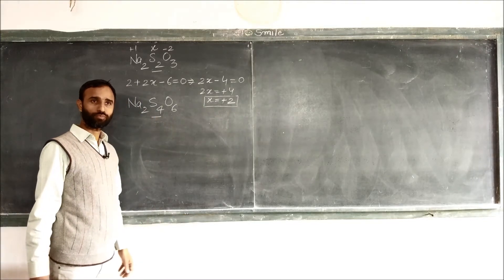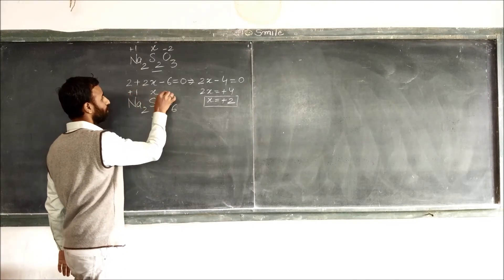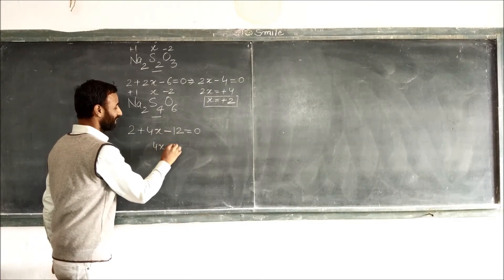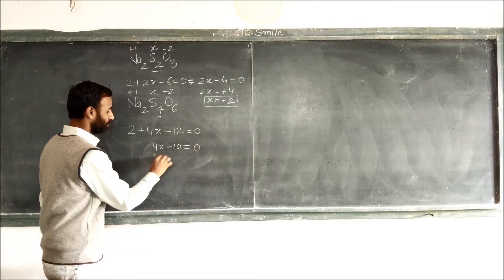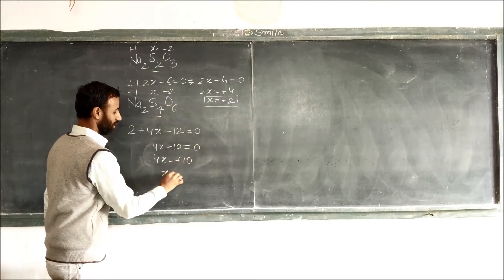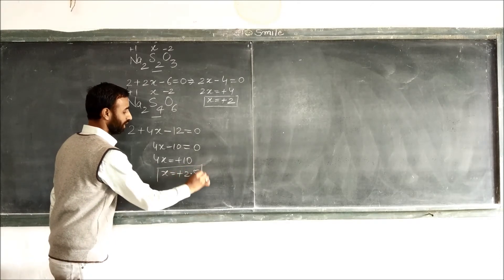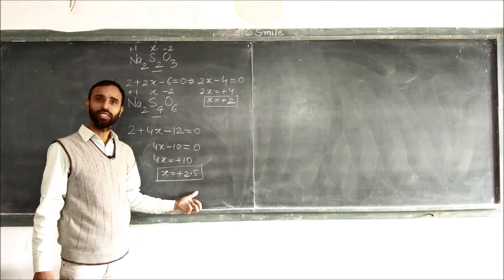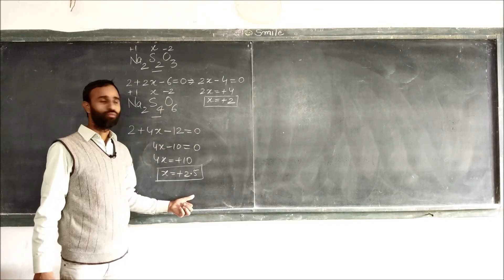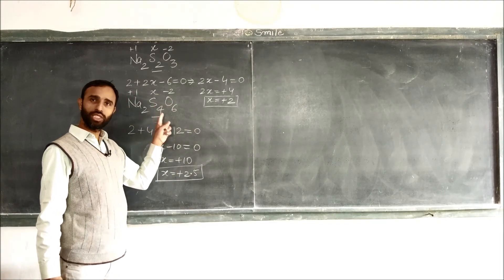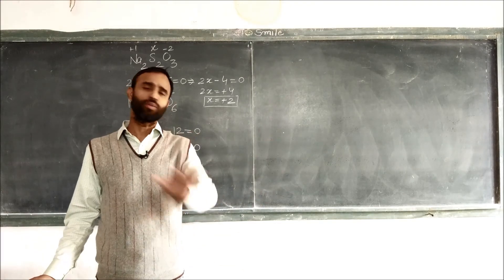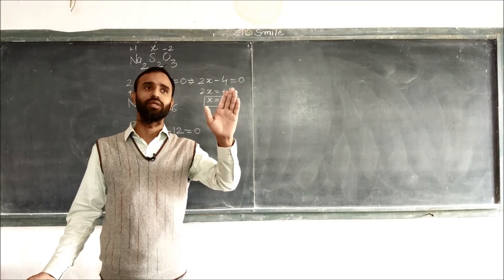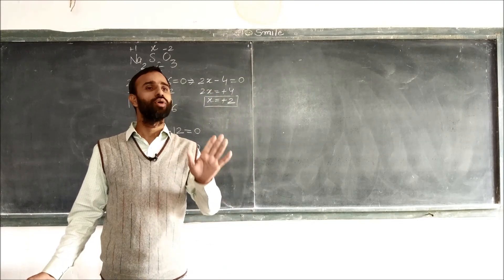A fractional oxidation number — such as plus 2.5 — means it is an average oxidation number. We can predict the oxidation number of each individual atom only by drawing its structure. All these rules are based on electronegativity.